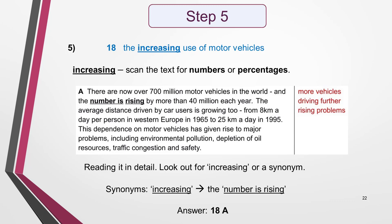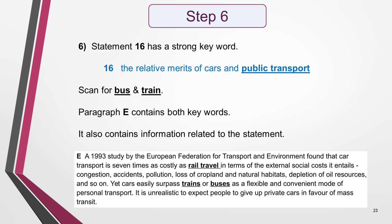I choose statement 18 next: the increasing use of motor vehicles. I select this because the word 'increasing' suggests the text will mention numbers or percentages, which should be easy to spot with a quick scan. Going back to the text, my eyes are immediately drawn to the first paragraph, which contains lots of numbers. I also noted 'more vehicles' beside paragraph A, which could be a paraphrase of 'increasing use of motor vehicles.' Reading the first sentence, I find the synonym 'the number is rising' used instead of 'increasing.' The answer is 18A. Don't waste time reading further than necessary to confirm a match.